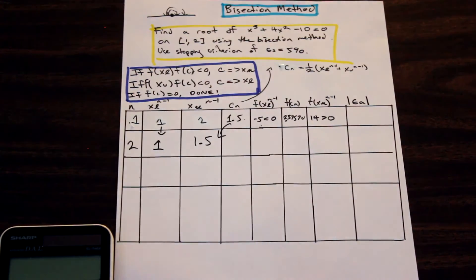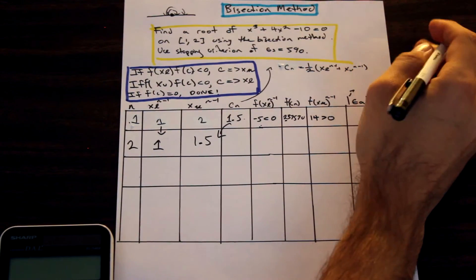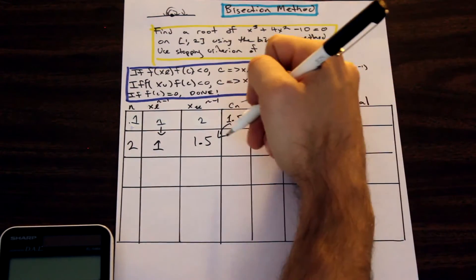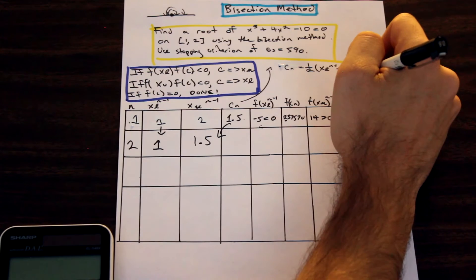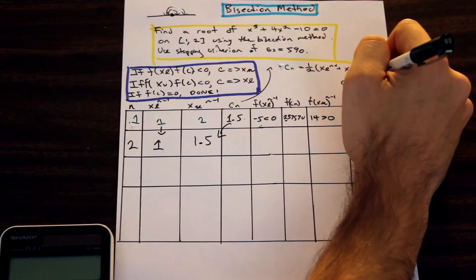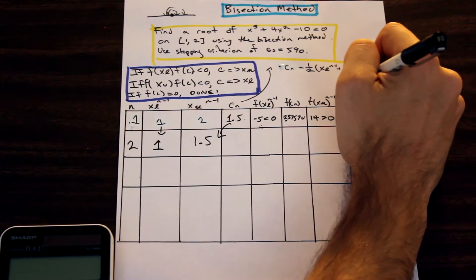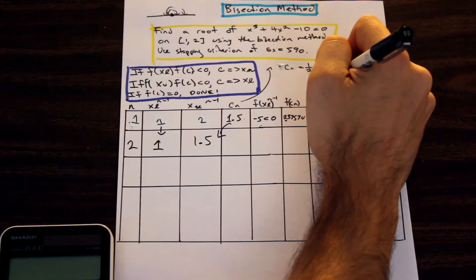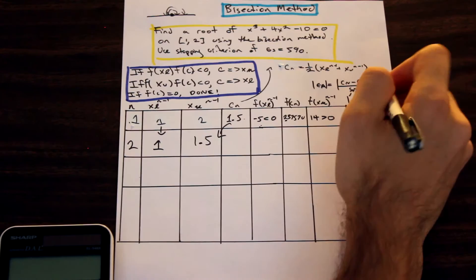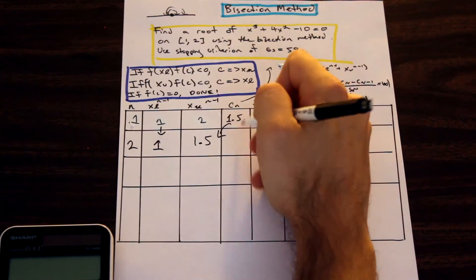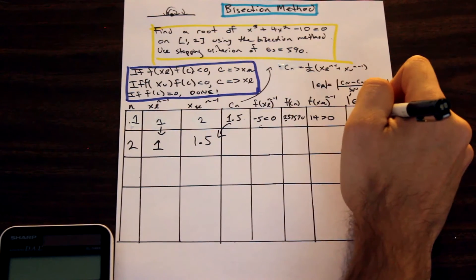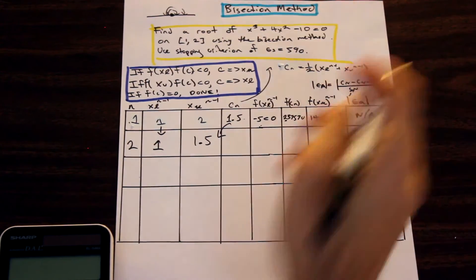For epsilon Ea, that's the percent change in the Cn values. The formula is: Ea equals the absolute value of Cn minus Cn minus 1, divided by Cn, times 100. There is no previous Cn value yet because we're only on our first iteration, so this is N/A — not applicable.